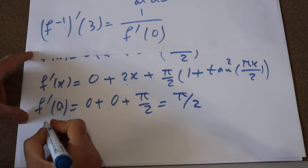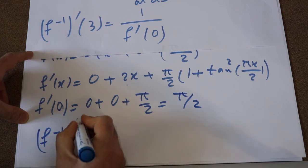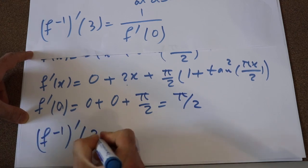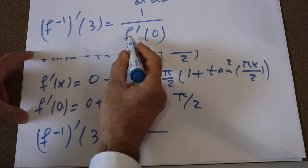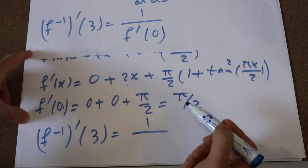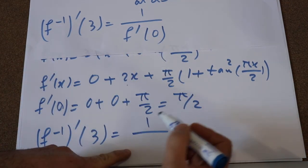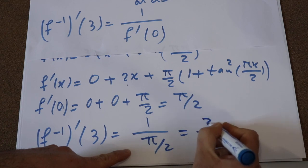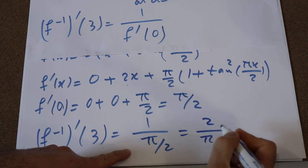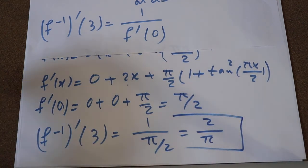Therefore, f⁻¹ prime(3) equals 1 divided by f prime(0), and f prime(0) is π/2, which gives 2/π. And that is the solution to this question.